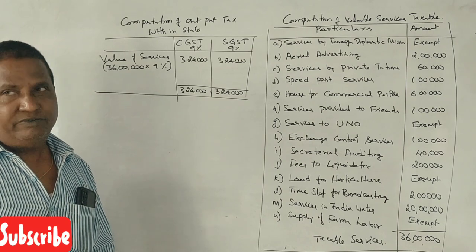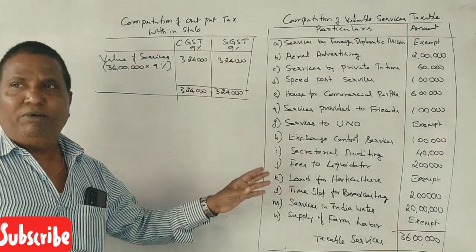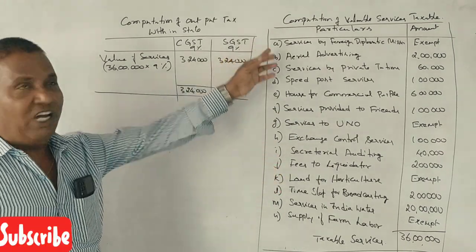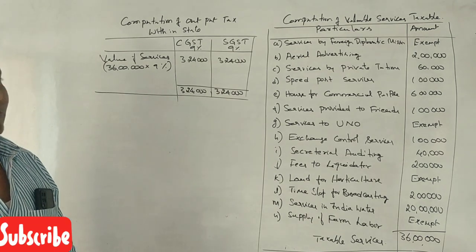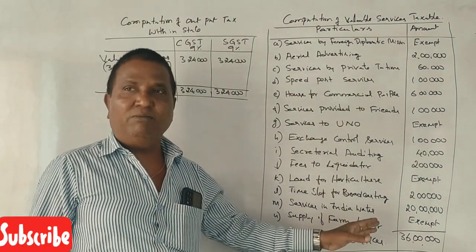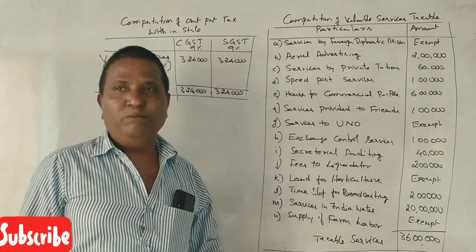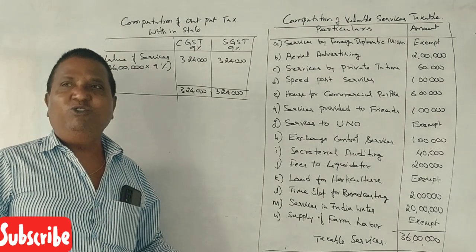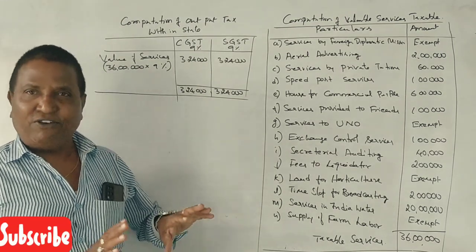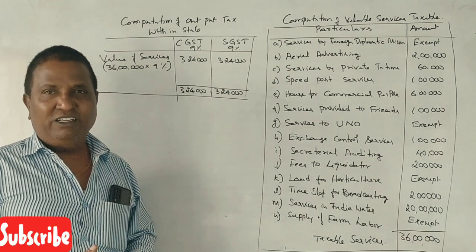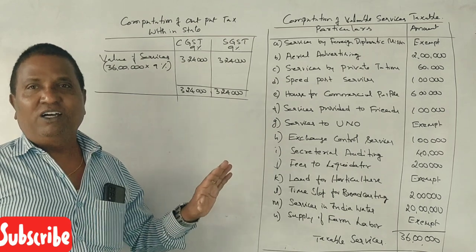For CGST, IGST, and SGST — suppose where services are within the state, put them in this column. Where services are outside the state, that goes in the IGST column. It all depends on how you present the answer. It should make sense.